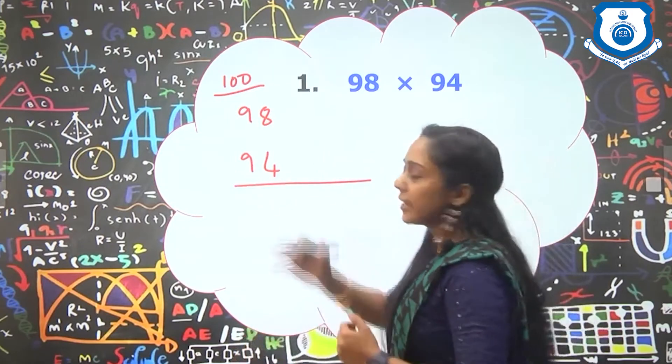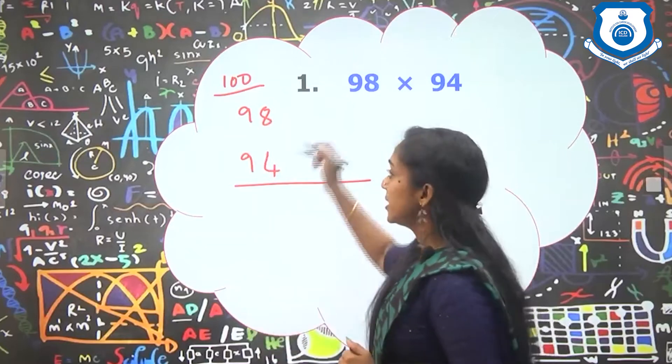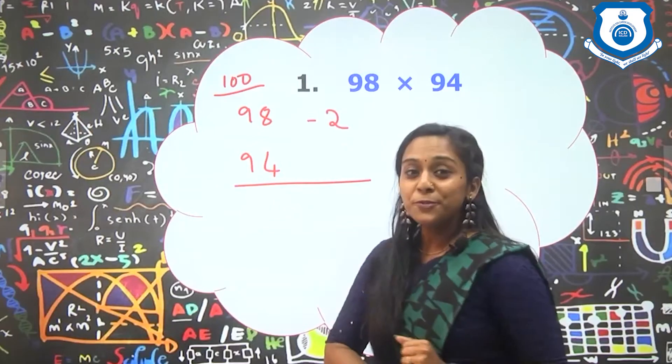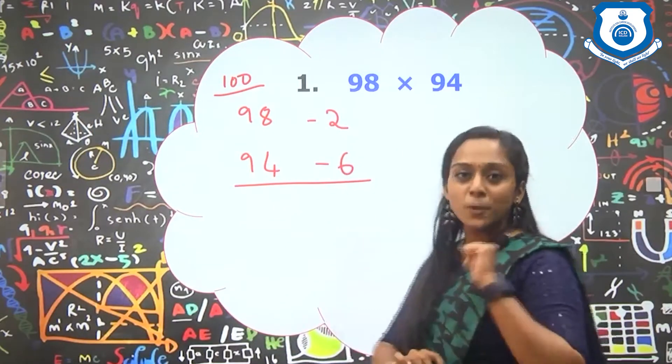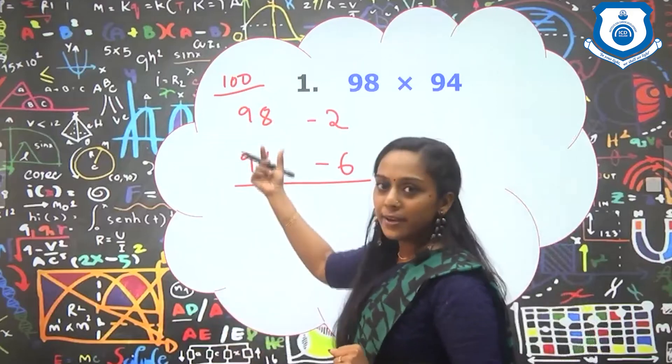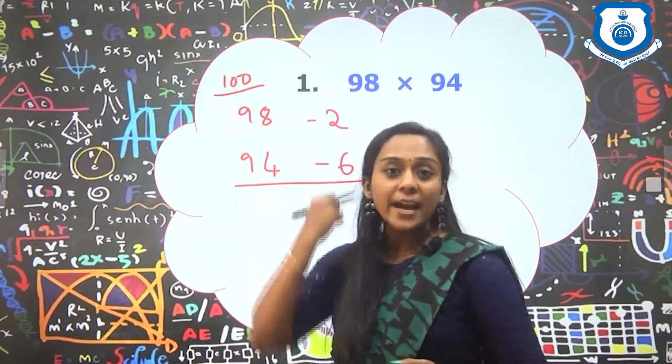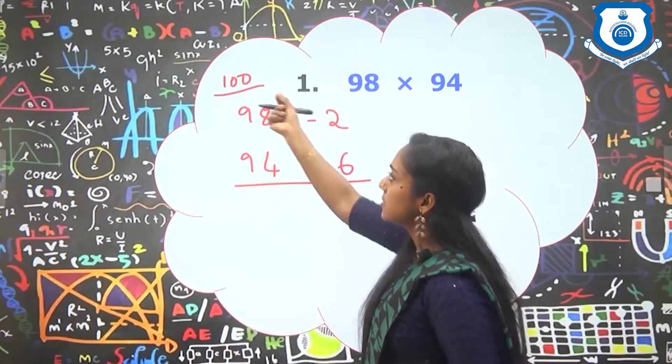So as the first step, what we are going to do is we are doing a comparison. 98 is how much less than 100? So it is 2 less than 100. So we are putting minus 2. 94 is how much less than 100? So this is minus 6. So 98 is 2 less than 100. 94 is 6 less than 100.